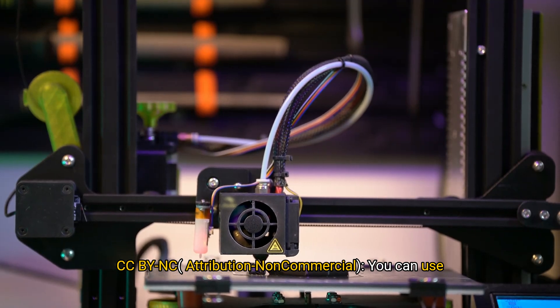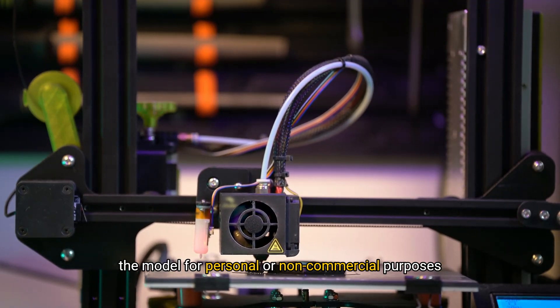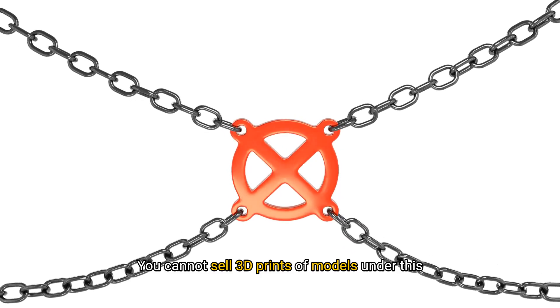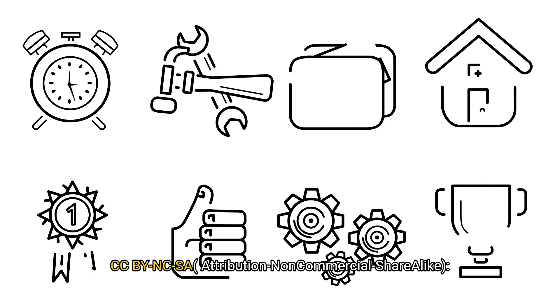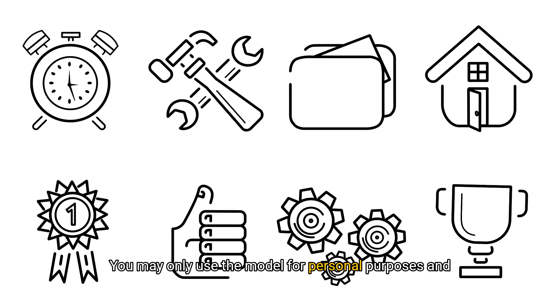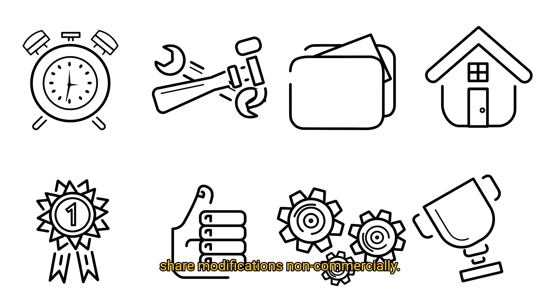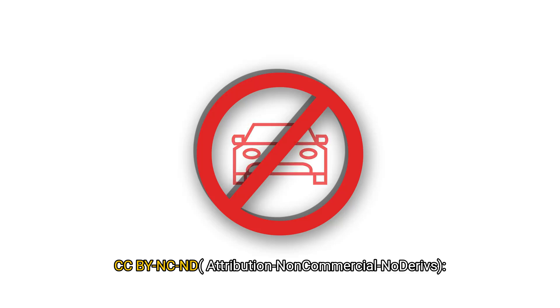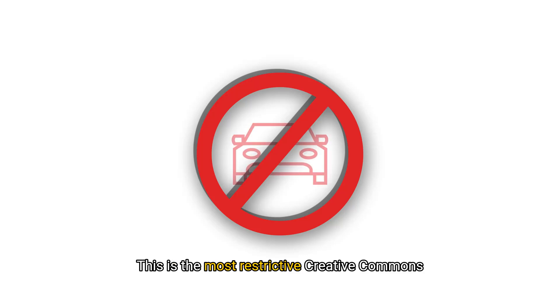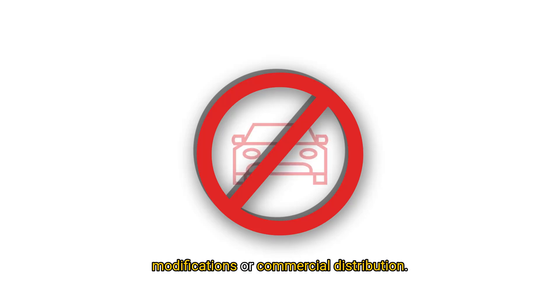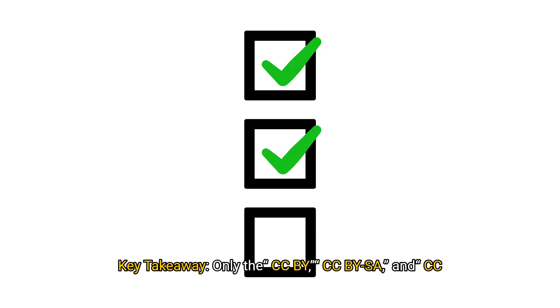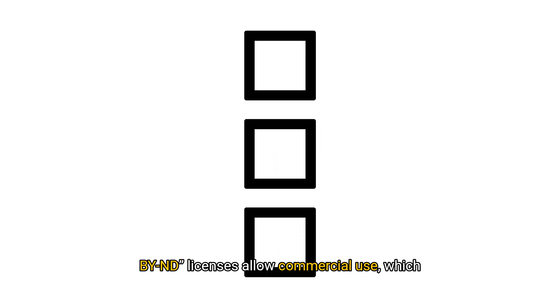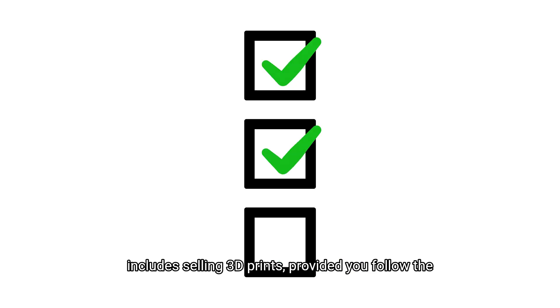CC BY-NC (Attribution Non-Commercial): You can use the model for personal or non-commercial purposes only — you cannot sell 3D prints of models under this license. CC BY-NC-SA (Attribution Non-Commercial Share Alike): You may only use the model for personal purposes and share modifications non-commercially; selling 3D prints is not allowed. CC BY-NC-ND: This is the most restrictive Creative Commons license, allowing only personal use without any modifications or commercial distribution — selling 3D prints is prohibited. Key takeaway: Only CC BY, CC BY-SA, and CC BY-ND licenses allow commercial use, including selling 3D prints, provided you follow the terms especially attribution.